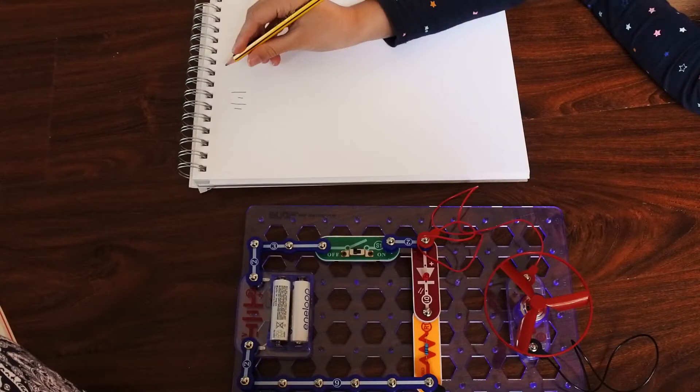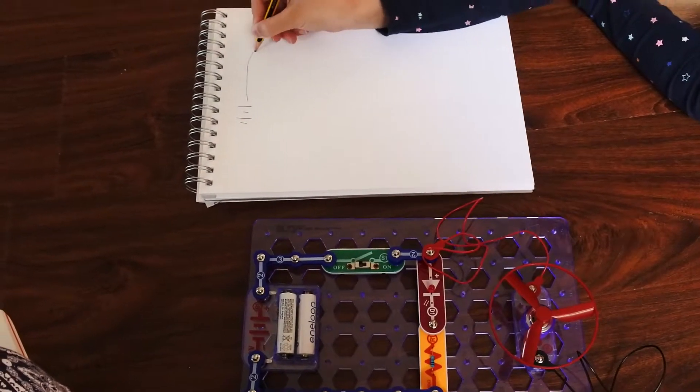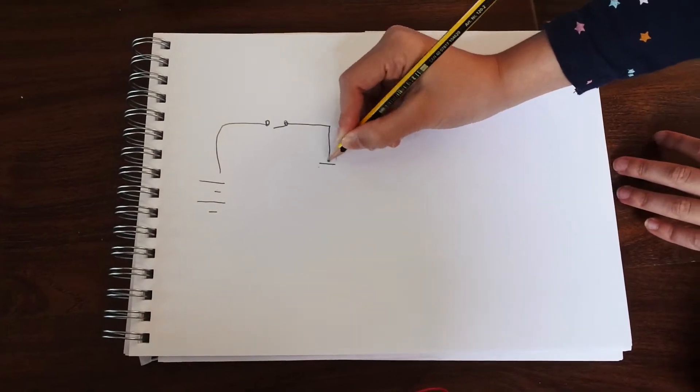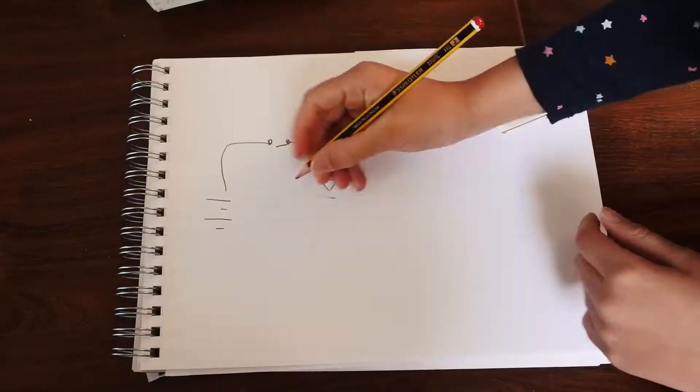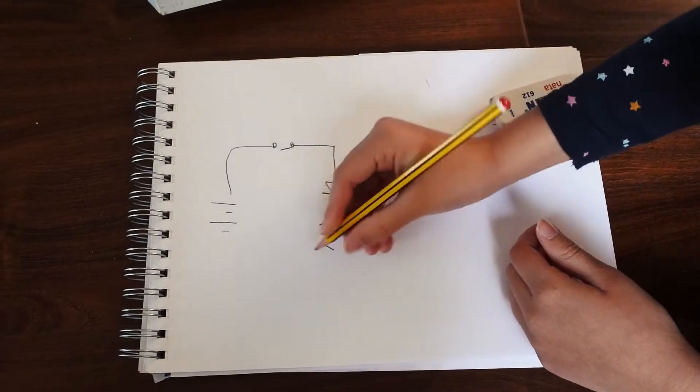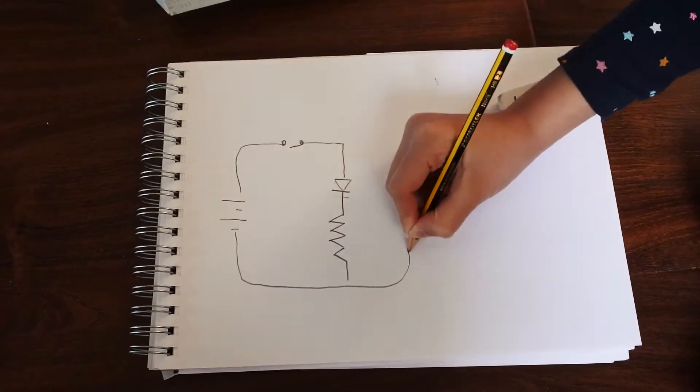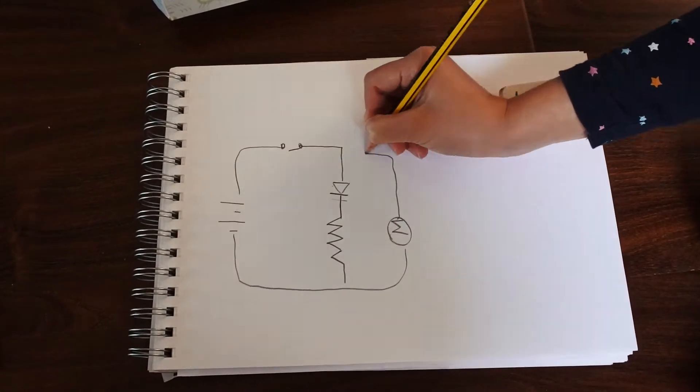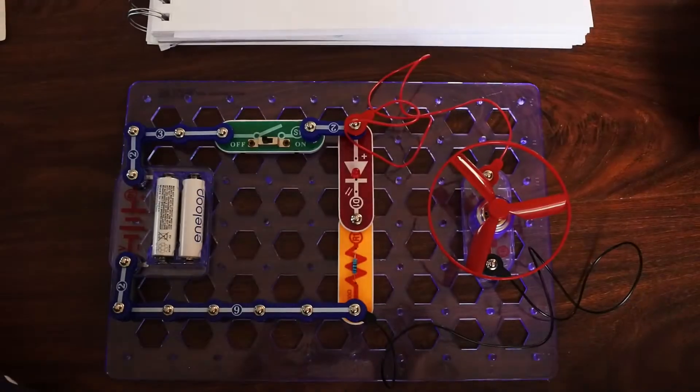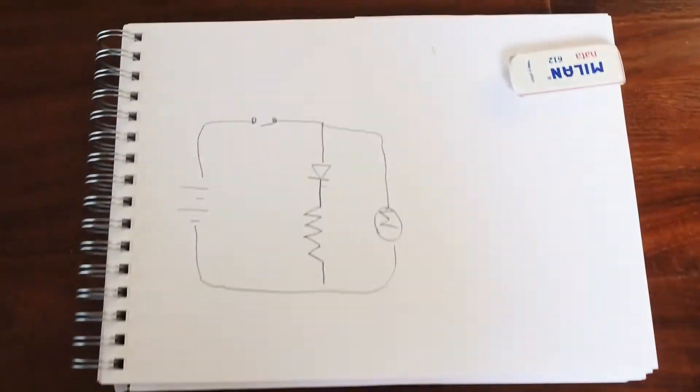Now we will let her reverse engineer what she did with the snap circuits. We want to make sure the circuit and its concept is very clear in her mind. We have hidden the original diagram and she is drawing a new diagram on her own from what she built on snap circuits. Let's take a look at what she drew and if it matches the circuit on the board.